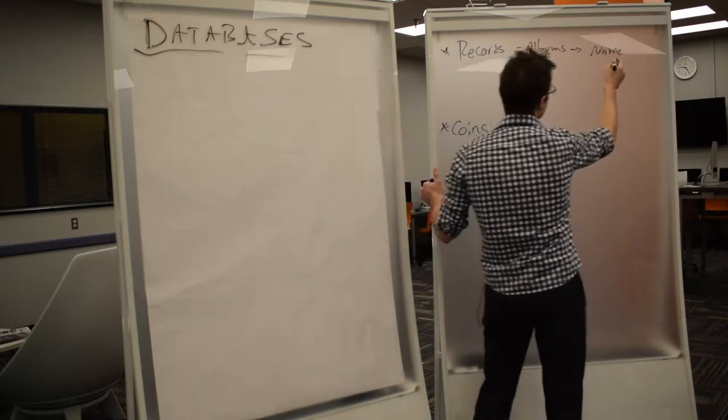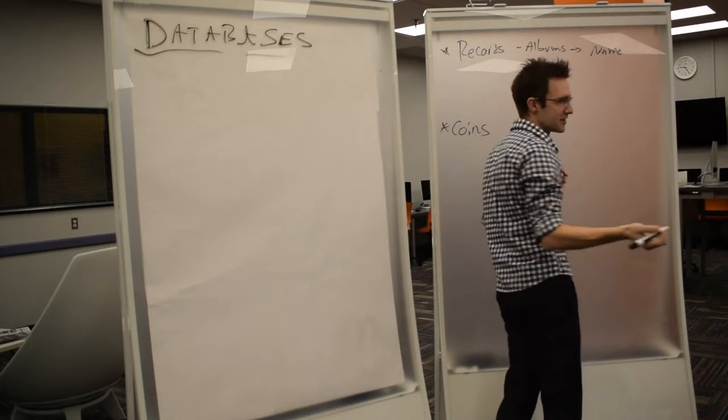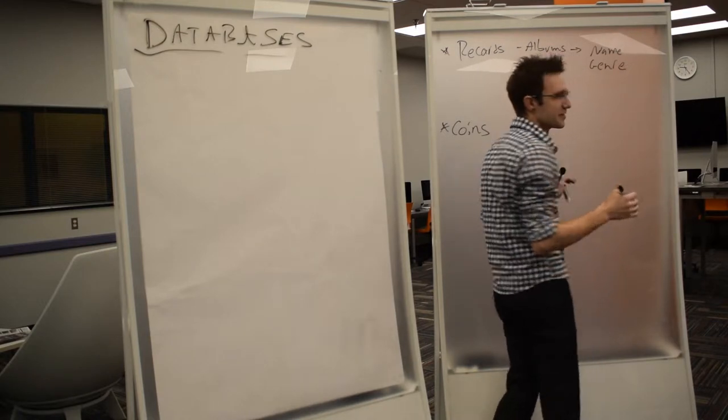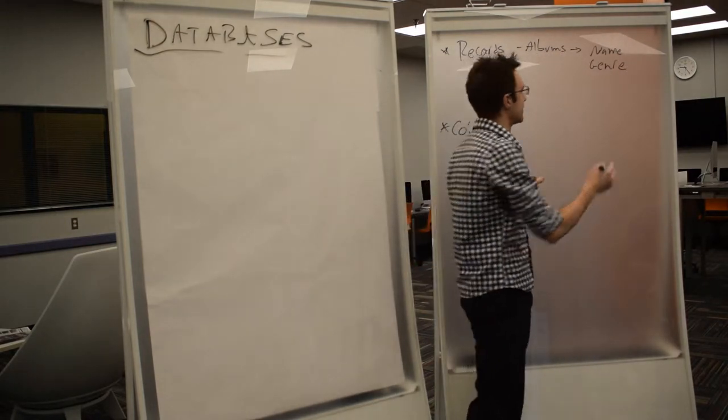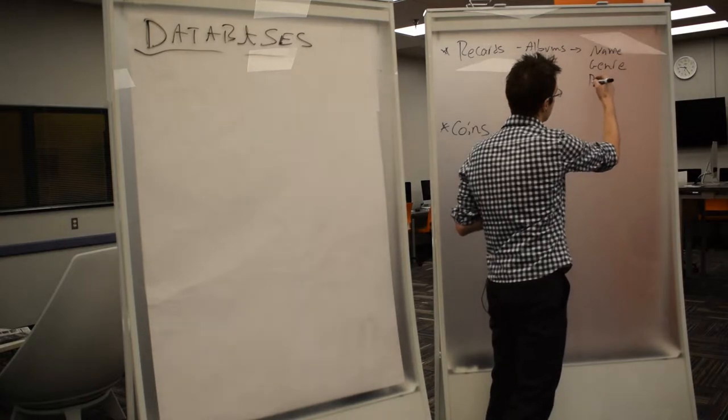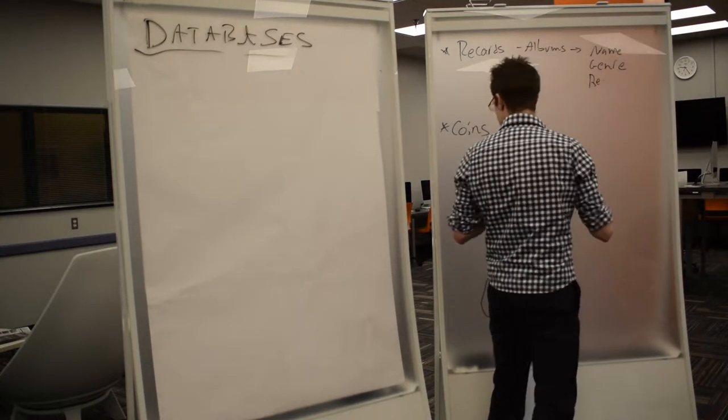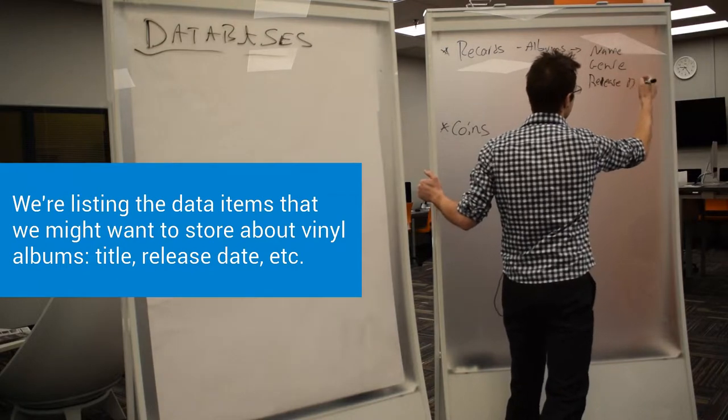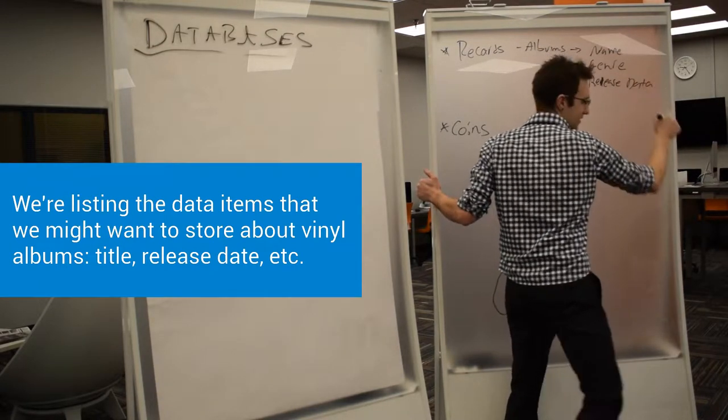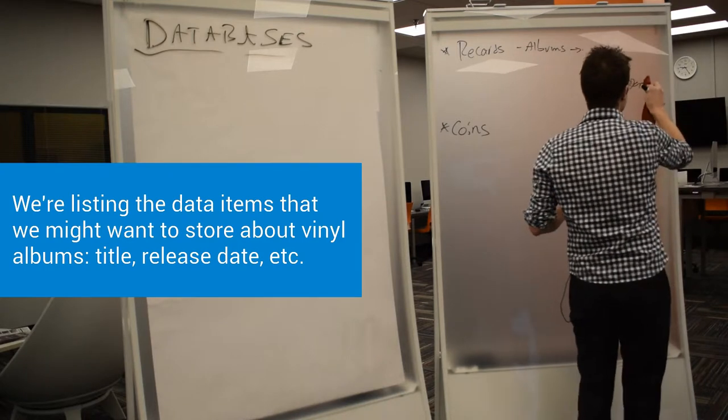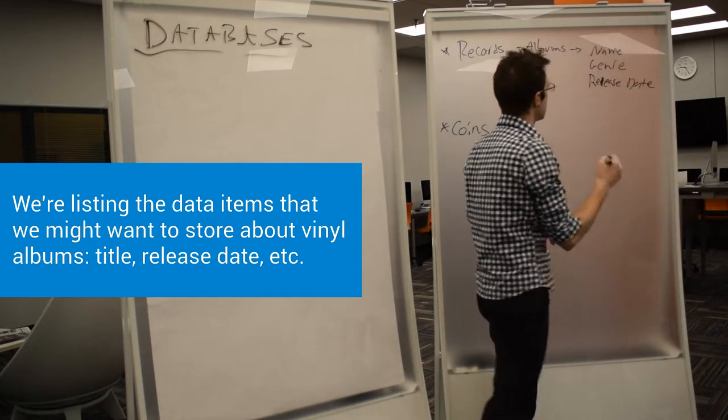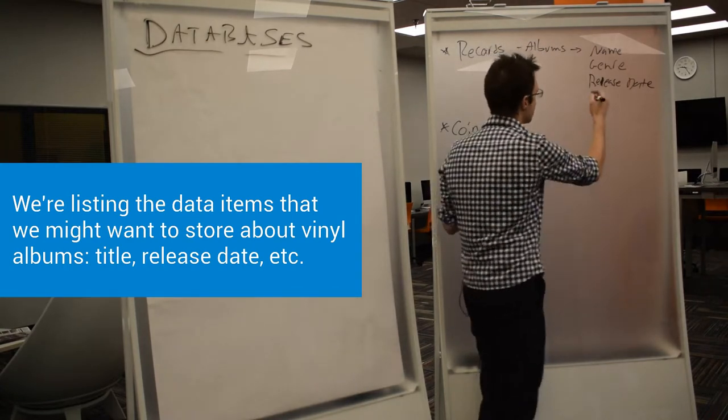Let's think with records for a second. Name of the record, obviously. Genre. Genre. The, importantly. Release date. Oh, release date. Yep. I gotta write better. Let me try it bigger. Release date. We have the songs. Yeah, that's interesting. We gotta figure out how to do that. That's cool. Release date. We're missing the big one. The artist. The artist. Yep.